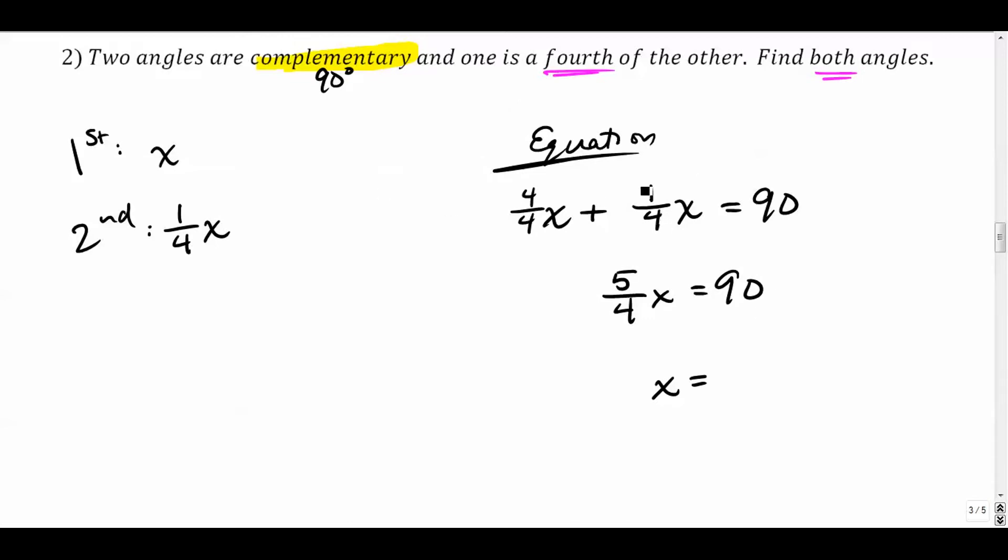Instead of dividing by 1.25, you can also multiply both sides by the reciprocal. These cancel, we get 90 times 4. 90 times 4 is 360 over 5, and that comes out to be 72.